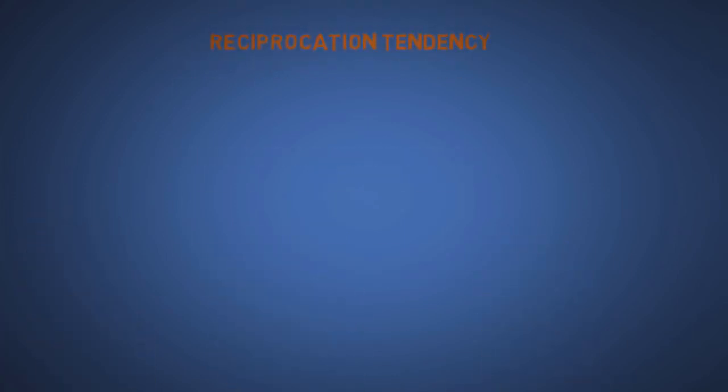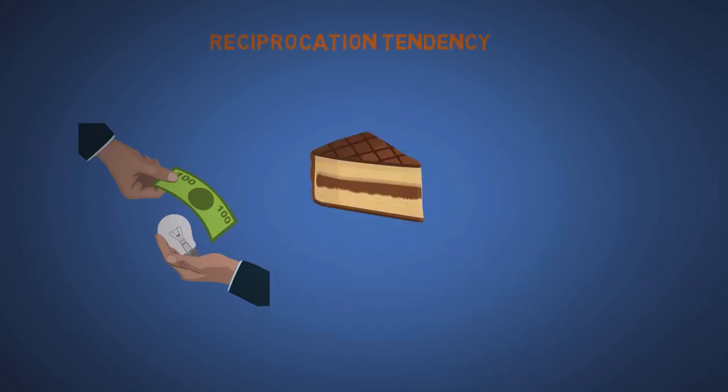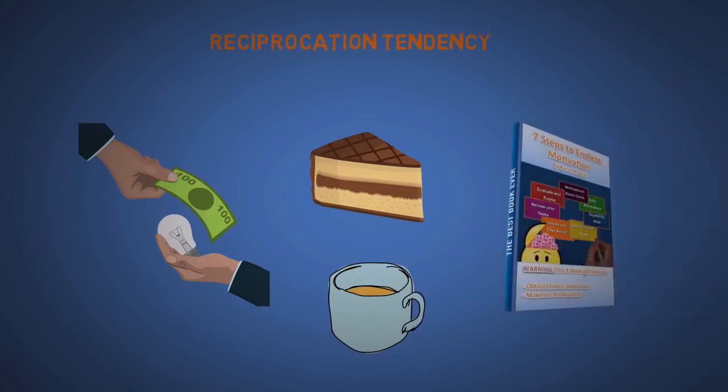The ninth is reciprocation tendency, which is related to the seventh. We tend to want to return the favor when someone gives us something or helps us out. This is why some supermarkets offer free samples, or why car salesmen might offer free coffee. But it is not why my ebook is free. I'm just nice.